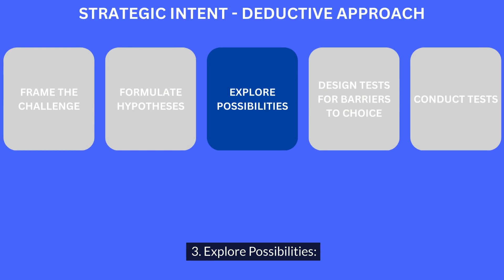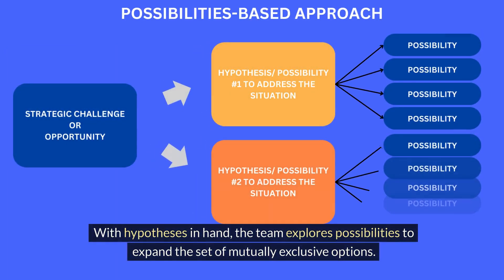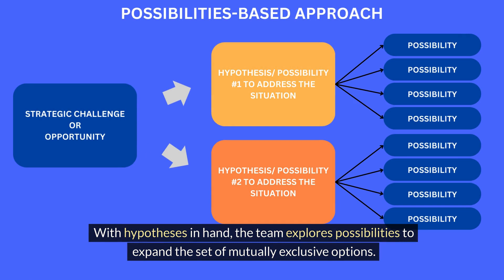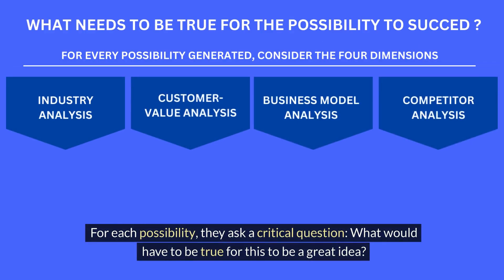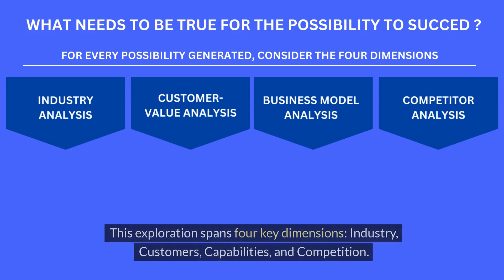Step 3: Explore possibilities. With hypotheses in hand, the team explores possibilities to expand the set of mutually exclusive options. For each possibility they ask a critical question: what would have to be true for this to be a great idea? This exploration spans four key dimensions: industry, customers, capabilities, and competition.